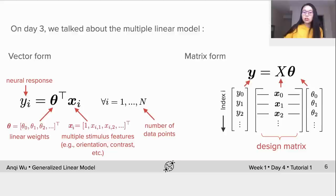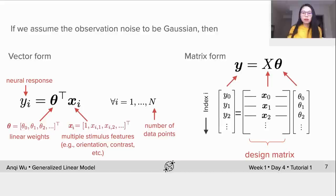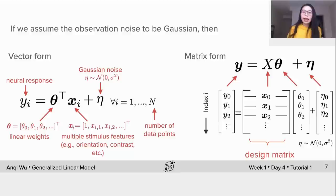We also talked about the linear model with Gaussian additive noise. Here is the vector form: η is a Gaussian noise with mean zero and variance σ². Here is the matrix form: bold η is a vector of Gaussian noise. Each element in this bold η is an IID sample from the zero mean Gaussian.